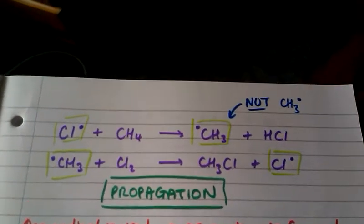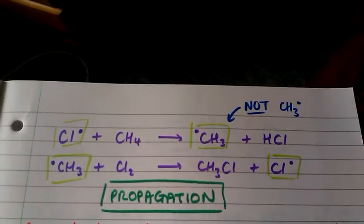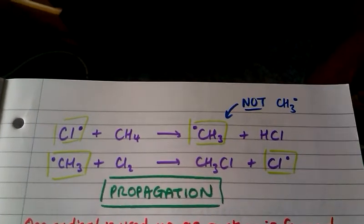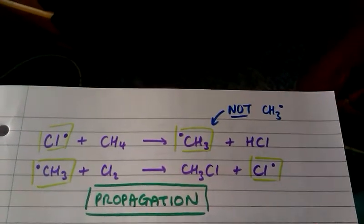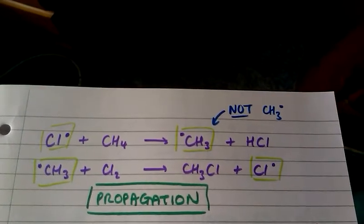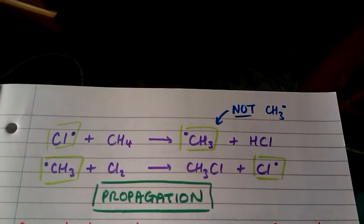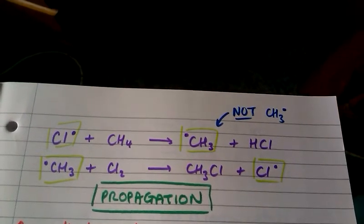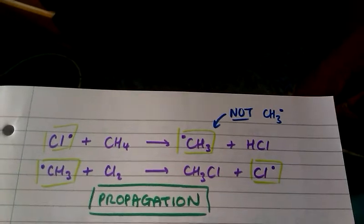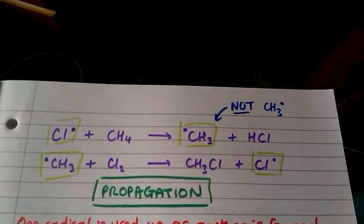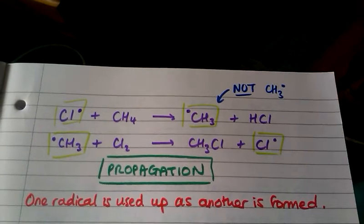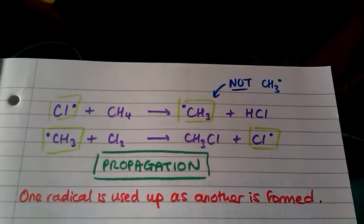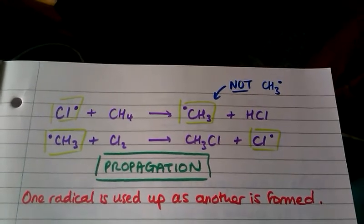Next we have the chlorine radical reacting with a molecule of methane to form a methyl radical. This methyl radical then reacts with a chlorine molecule to form chloromethane and a chlorine radical. Both of these steps are called propagation steps. These are easy to recognize because on the left-hand side we have one radical being used up as another one is formed on the right-hand side.